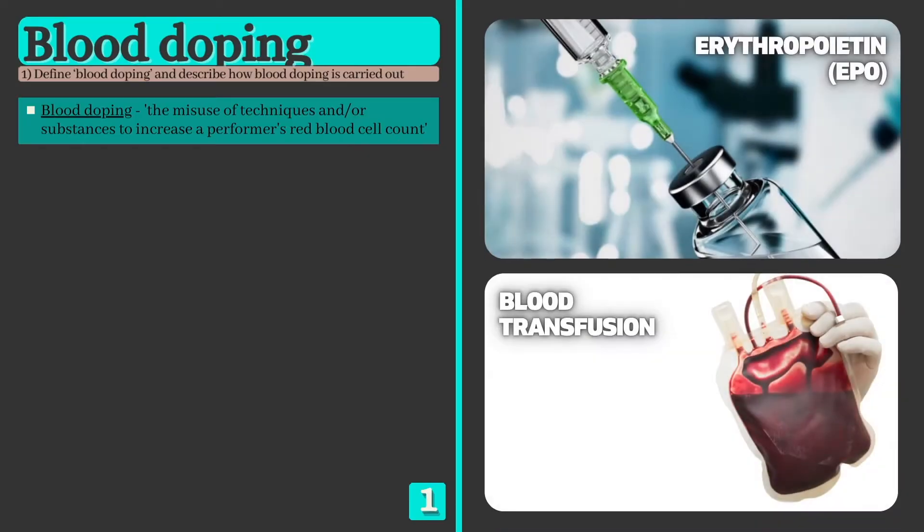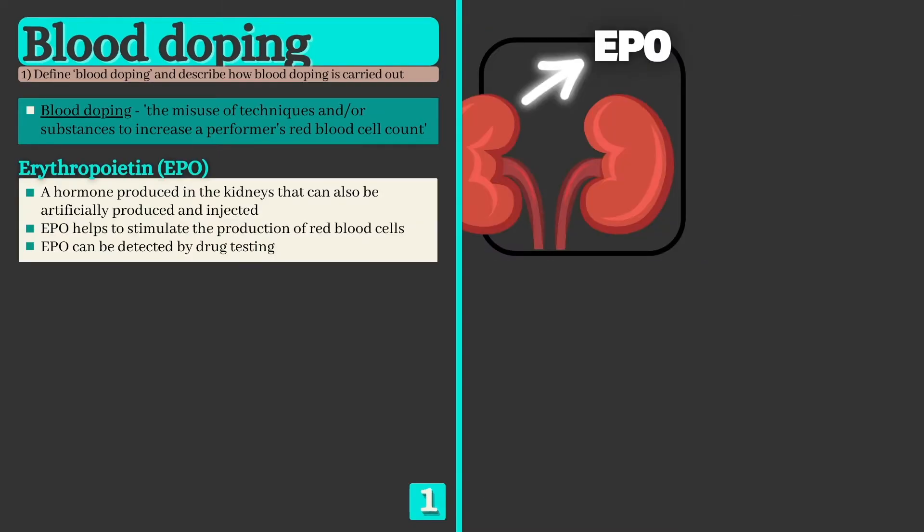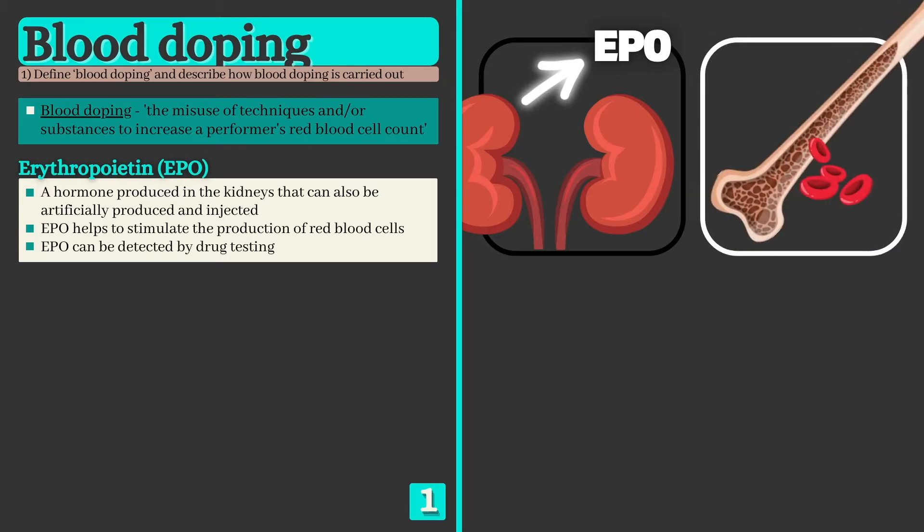There are two ways in which this can be achieved. The first is through injecting the banned substance erythropoietin, or EPO. EPO is actually a naturally occurring hormone that's released by the kidneys and stimulates the production of red blood cells in the bone marrow.